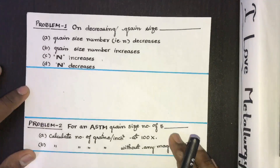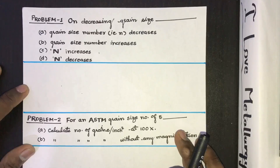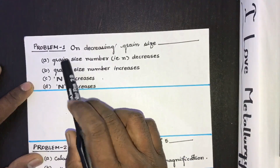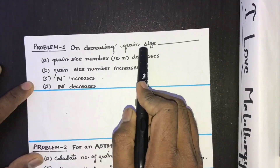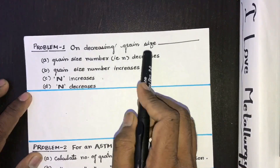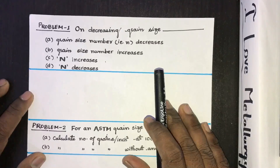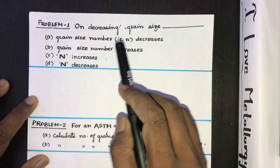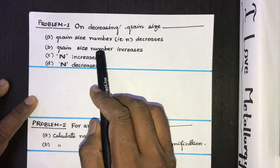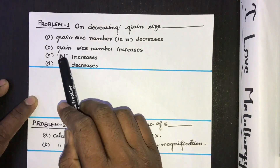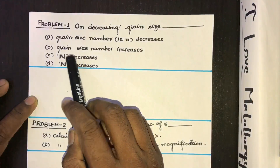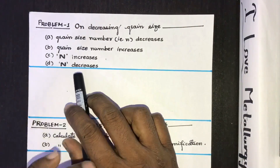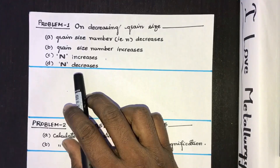Let's do some questions on it. The first question: on decreasing grain size, which of the following statements is correct? First, grain size number n decreases. Second, grain size number n increases. Third, capital N — the number of grains per square inch — increases. Fourth, capital N decreases.